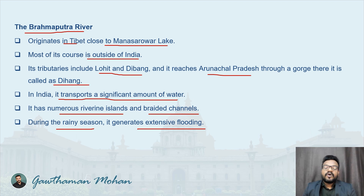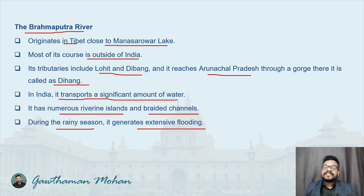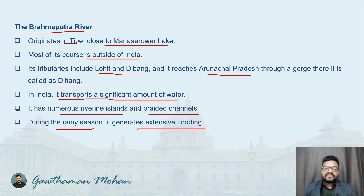These are the three important river systems included in the Himalayan rivers: the Indus river system, the Ganges river system, and the Brahmaputra river system. They are called river systems because not only these rivers, but also their many tributaries, are included — that is why they are known as river systems.